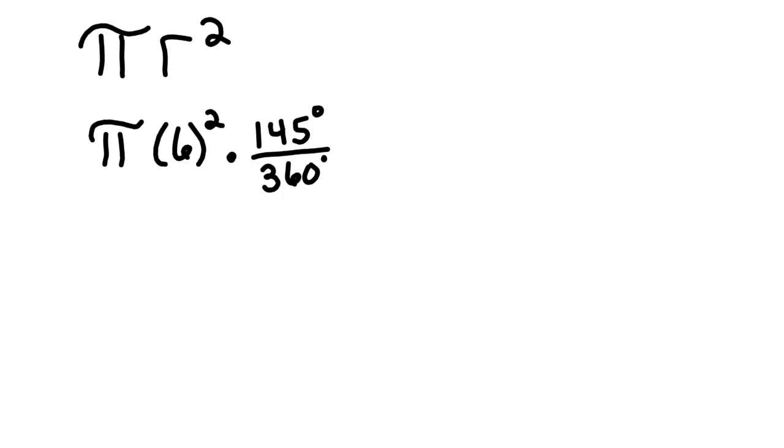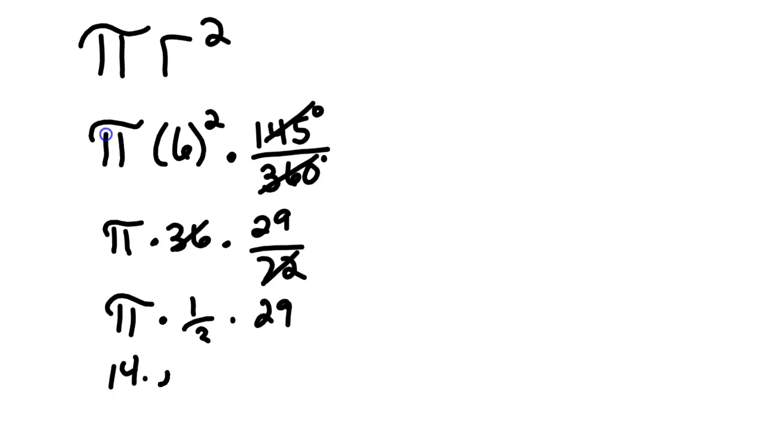And what's kind of nice, we'll do some of this by hand. So that's pi times 36. If you take a 5 out of the 45 and the 360, you get 29 over 72. Then 36 and 72 reduced to 1 half, and so this is pi times 1 half times 29, or 14.5 pi.